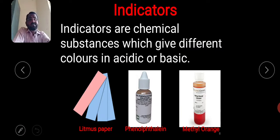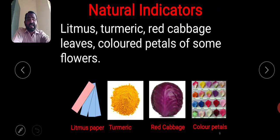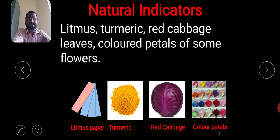Indicators are chemical substances which give different colors in acidic or basic medium. There are three different types of indicators: litmus paper, phenolphthalein, and methyl orange. Natural indicators are naturally available, such as litmus, turmeric, red cabbage leaves, and colored petals of some flowers.